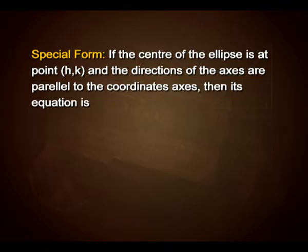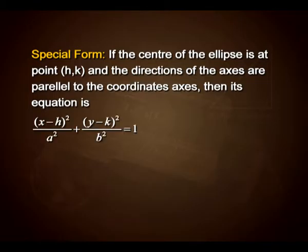In the special form, if the center of the ellipse is at a point (h, k) and the directions of the axes are parallel to the coordinate axes, then its equation is (x − h)²/a² + (y − k)²/b² = 1.